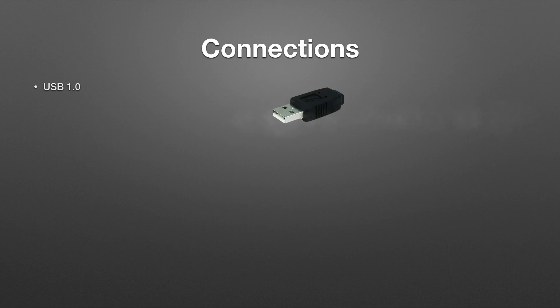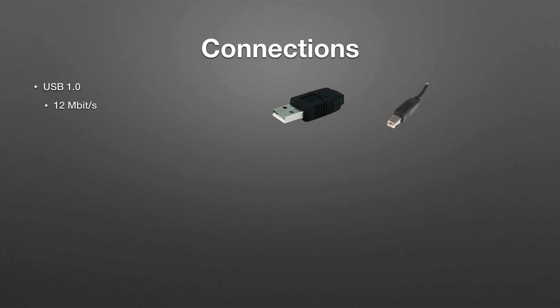The Type A connection is the most common, found on mice, keyboards, and flash drives, while the Type B connection is usually found on scanners or printers. The original design of USB allowed for a maximum or full bandwidth speed of only 12 megabits per second. In 1994, two years earlier, Apple developed a connection type called IEEE-1394. The name they chose to use that people could actually remember was called Firewire.